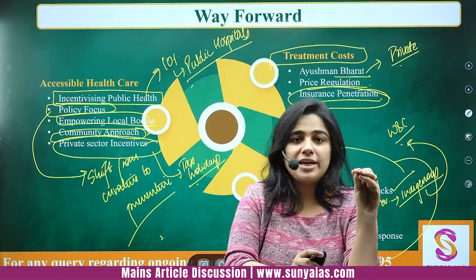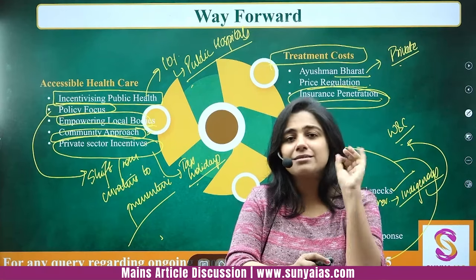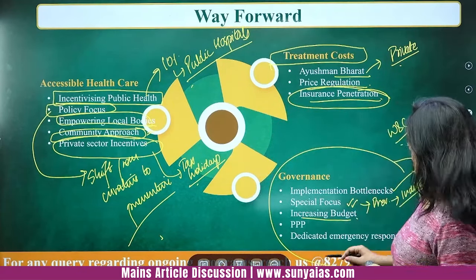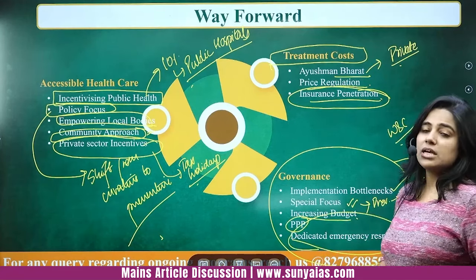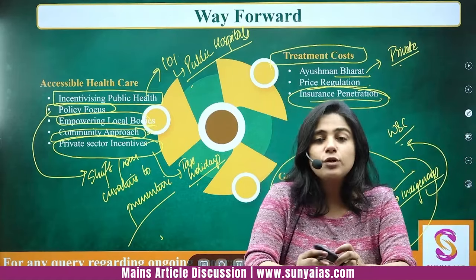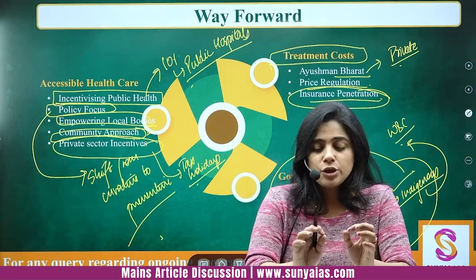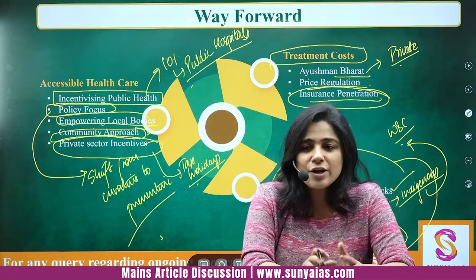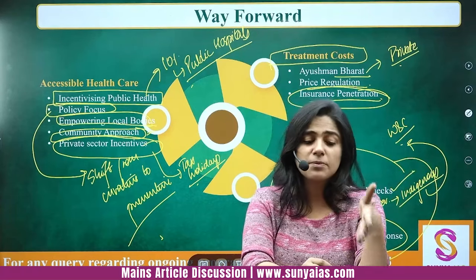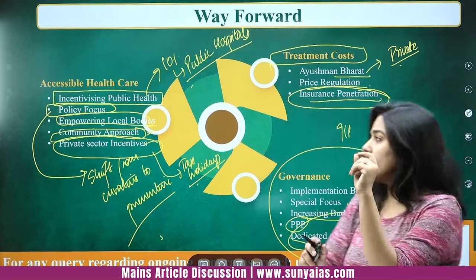In countries like Sweden, Norway, and Denmark, governments pay 50% or more of healthcare costs, so people don't worry about accidents wiping out savings. We also need public-private partnership and a dedicated emergency response system. In the US, 911 is one number for any emergency — fire, medical, anything. India has separate numbers for police, ambulance, and women helplines. A single, functional emergency number is required so everyone knows what to dial in distress.